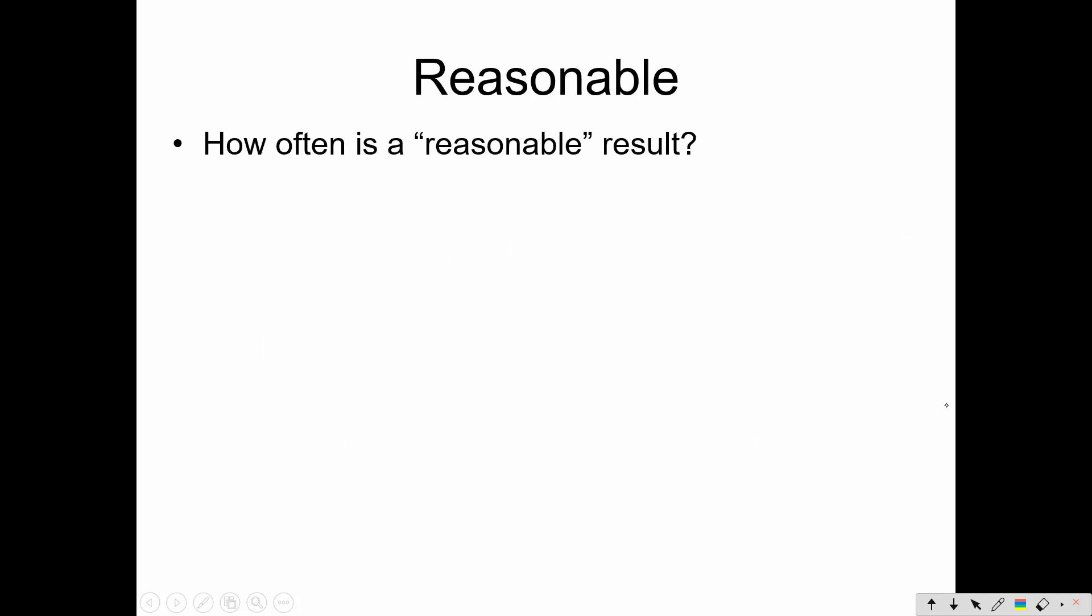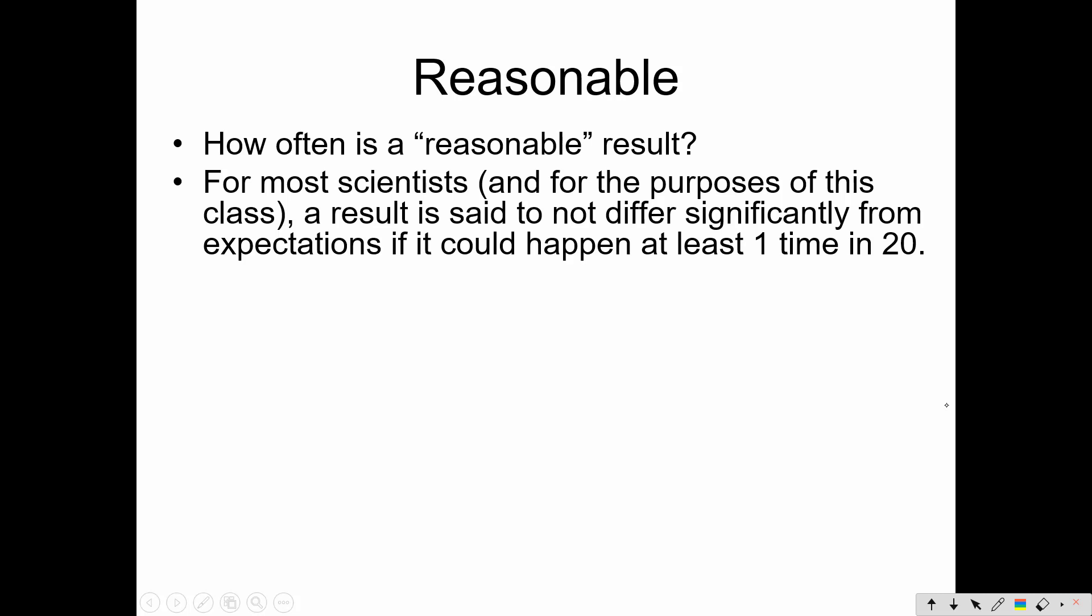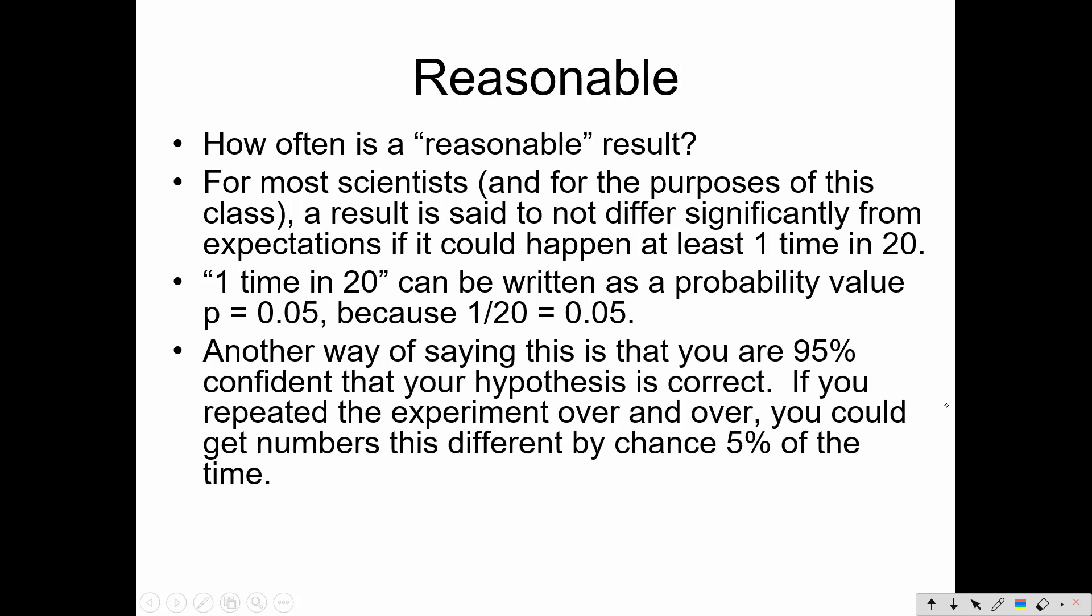So how often is a reasonable result? For most scientists, and for the purposes of our class, a result is said to not differ significantly from expectations if it could happen no more than one time in 20. If it happens less than one time in 20, we're okay with that. One time in 20 can be written as a probability value. That's p = 0.05. Another way of saying that is that you're 95% confident your hypothesis is correct.